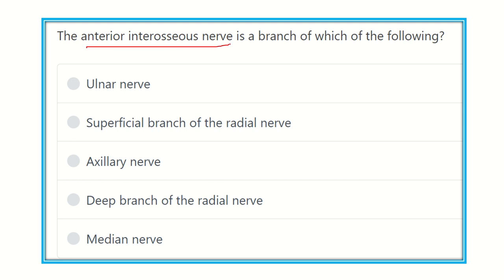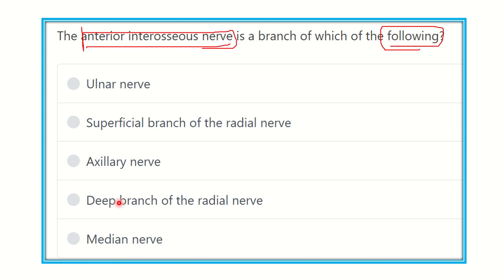The anterior interosseous nerve — it runs from which of the following? It is a direct question: the anterior interosseous nerve, it arises from which nerve? The options are: ulnar nerve, superficial branch of the radial nerve, the axillary nerve, deep branch of the radial nerve, and median nerve.